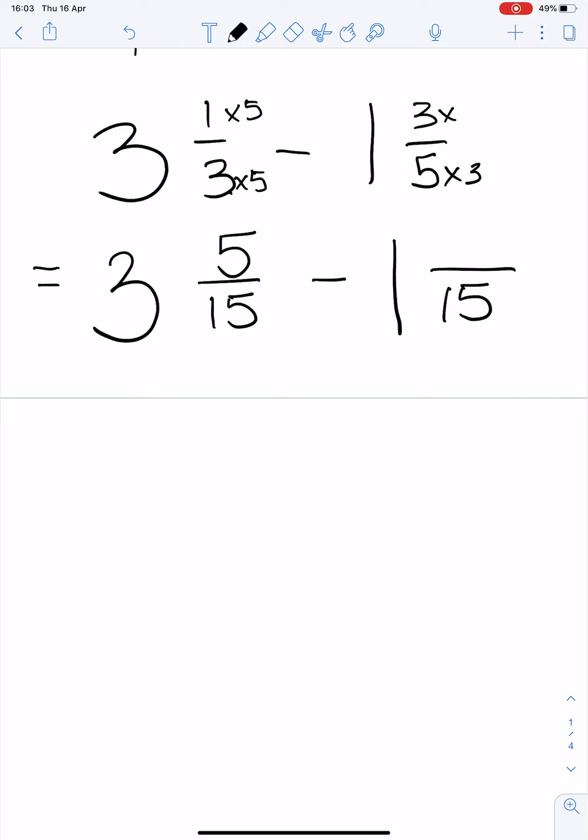Example 2 is 3⅓ - 1⅗. Different denominators. We need to find a number that 3 and 5 fit into. If we times 3 by 5 we get 15. So our new sum will have 15 as a denominator for both sides. 3 times by 5 is 15 so we must do the same to the top. 5 times by 3 is 15 so we do the same to the top.